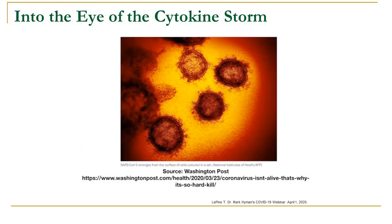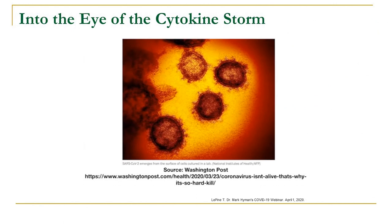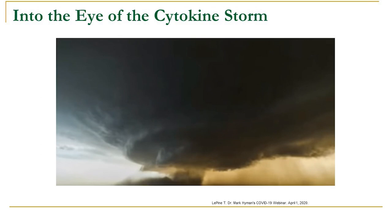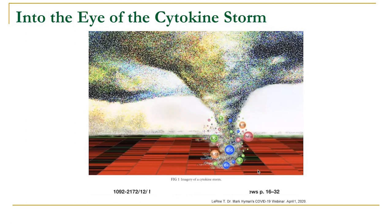Regarding the cytokine storm: if we have a functioning healthy immune system, it is believed we can stop this virus in its tracks. Natural roaming cytotoxic T-cells and natural killer cells identify infected cells, respond to danger signals, and eliminate those infected cells before the virus can replicate. However, certain individuals get into a cytokine storm — an intense and exaggerated inflammatory response. It's like a tornado: are we going to be hit by the tornado, thrust into the cytokine storm, and end up in the perfect storm?